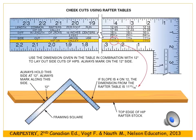Use the rafter tables on the framing square to find rafter lengths. For a 4-12 roof, the framing square shows the length of the common rafter per foot of run is 12.65 inches, and the hip or valley rafter is 17.44 inches per foot of run. For a 20-foot wide building with a run of 10 feet, the line length of the common rafter is 12.65 × 10 = 126.5 inches, or 10 feet 6.5 inches. The hip rafter would be 17.44 × 10 = 174.4 inches, or 14 feet 6 and 3 eighths inches.